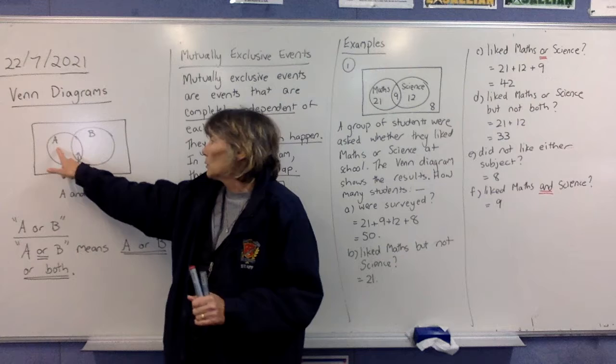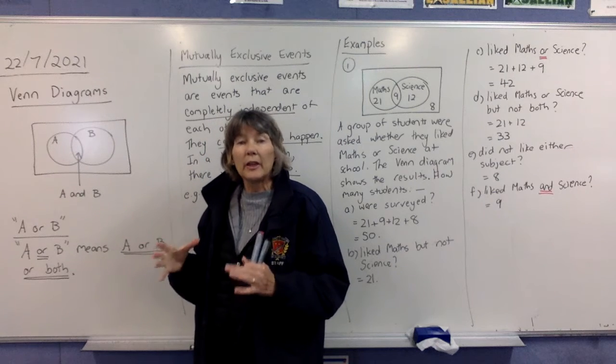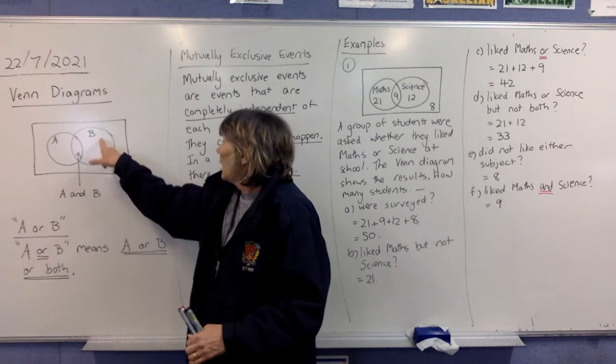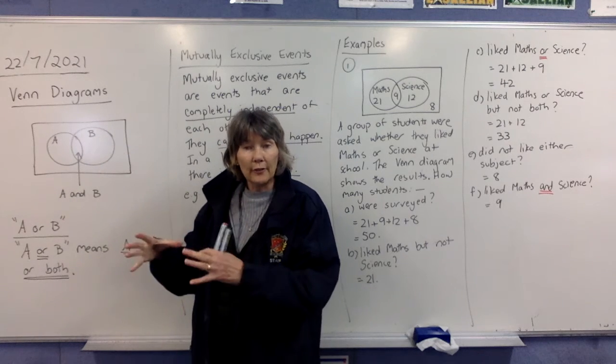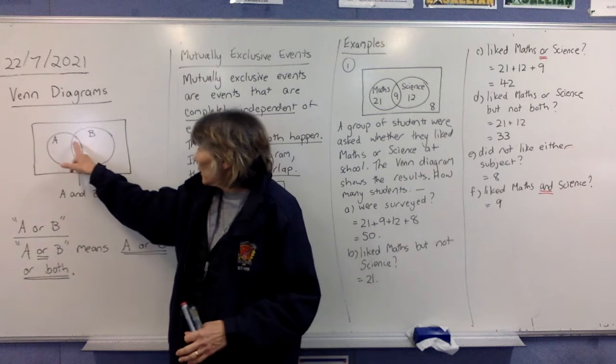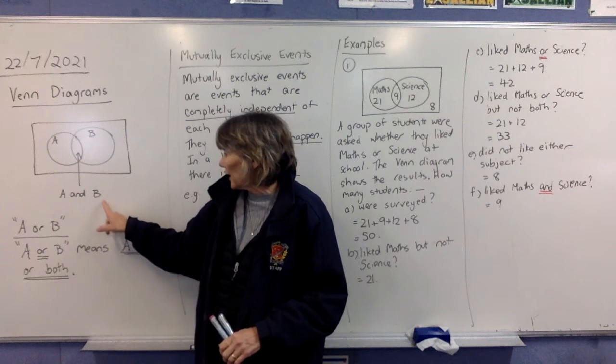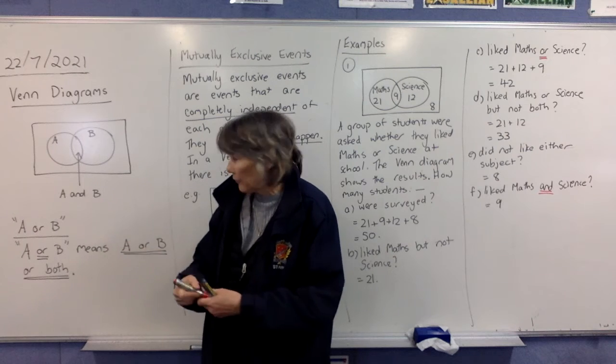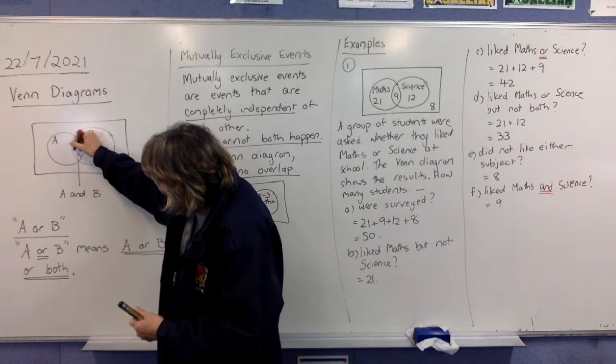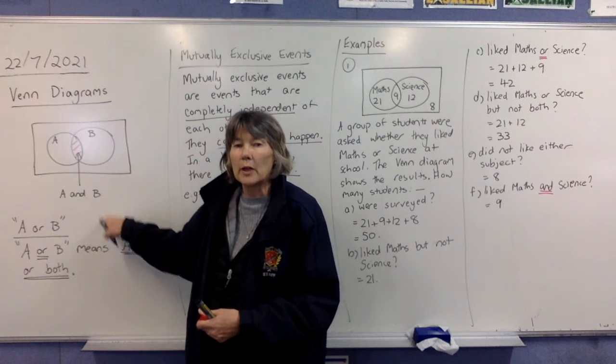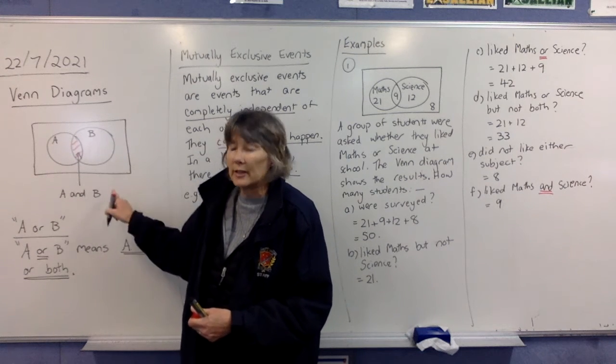So one circle talks about a particular thing. It might be that you're a male, it might be that you like cricket. B is a different thing. And then we've got an overlap in the middle. Now in that overlap, in that section there, that's where we have the numbers of people that fit both categories together. So they fit into A and they fit into B.